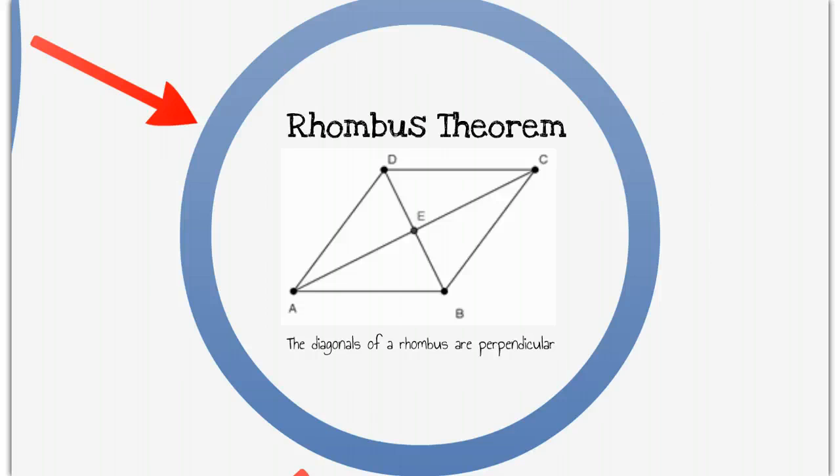The rhombus theorem is that not only do the diagonals bisect each other, and opposite sides are congruent and opposite angles are congruent, but you can find out that the diagonals of a rhombus are perpendicular. And so you can show that DB is perpendicular to AC.